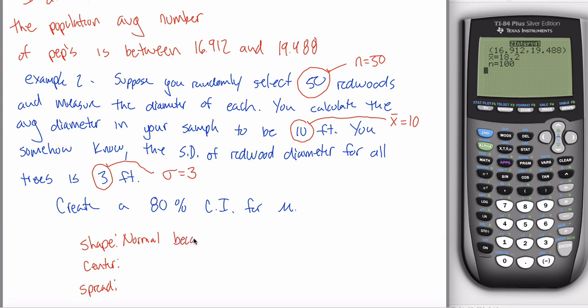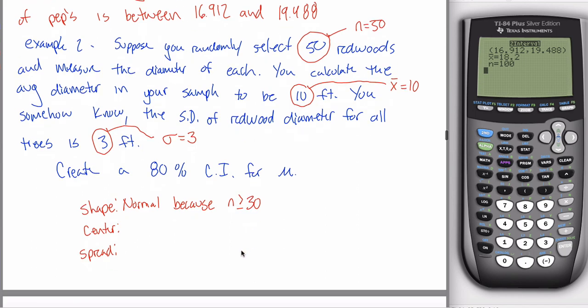And you're going to write because, and then you'll write one of two things. You'll either write because the parent distribution is normal if I said in the problem that the diameter is normally distributed. But if I didn't, like in this case, you'd say because n is greater than or equal to 30. You're citing the central limit theorem here.